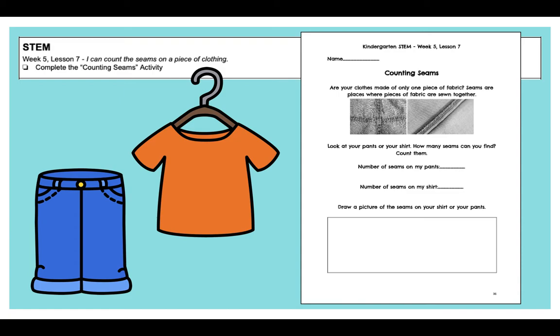I bet you'll be able to find them on the sides of your shirt and the bottom of your shirt and on the legs of your pants. Then it says, draw a picture of the seams on your shirt or on your pants. So that's your activity for STEM, Kinder Friends. This probably won't take you very long to do it all. It's going to be nice and quick this week.